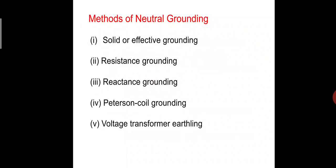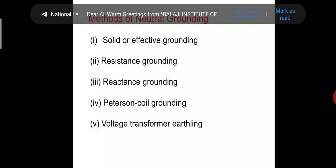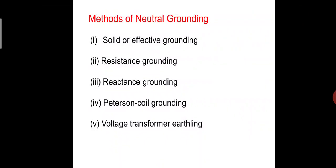Methods of neutral grounding — there are five types: Solid grounding, Resistance grounding, Arc suppression or Peterson coil grounding, Reactance grounding, and Voltage transformer grounding. The first three are the most important methods of neutral grounding.